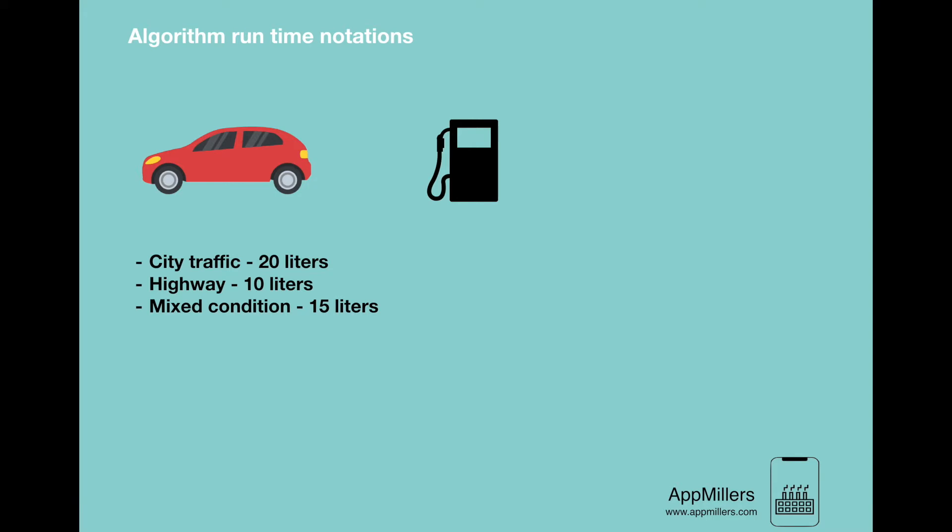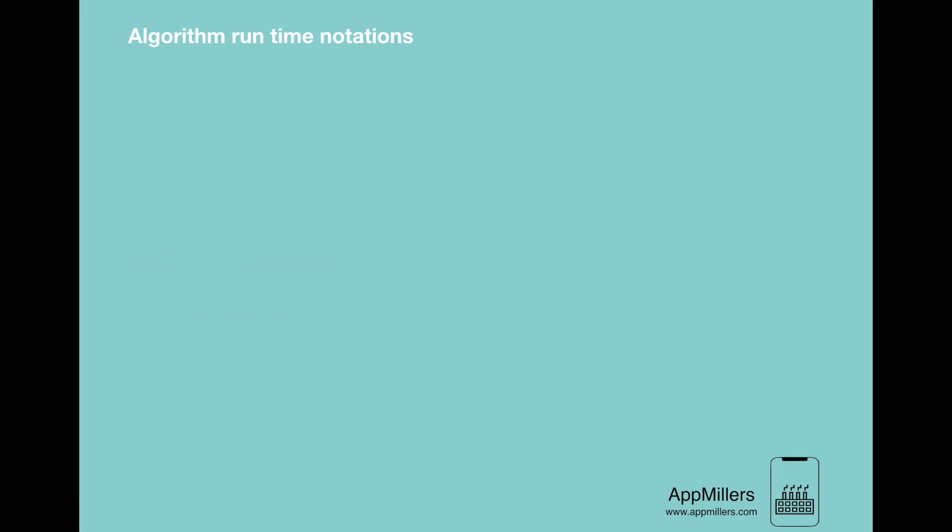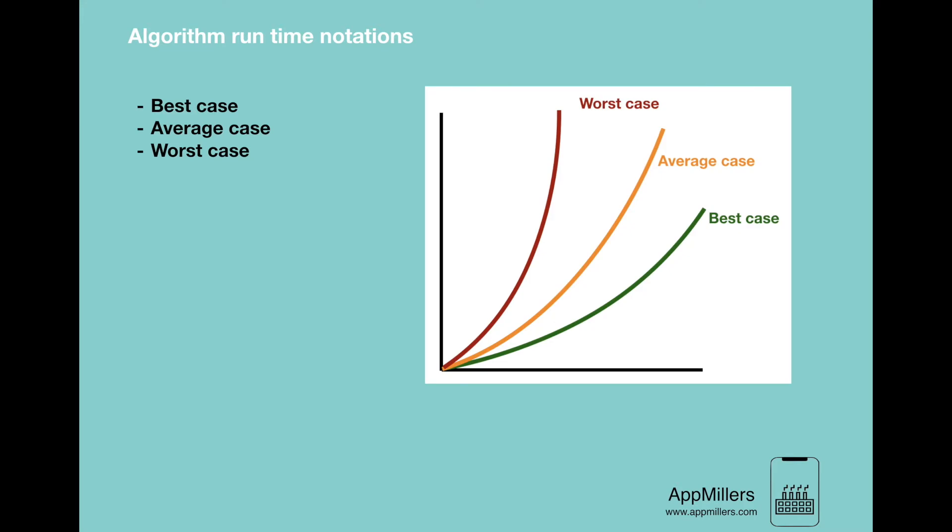Similarly, algorithms can perform differently based on the condition that is given. We have three scenarios in case of measuring any given algorithm: the best case, the worst case, and the average case. Let's say for an algorithm, it takes one minute to execute in the worst case scenario. In the best case scenario, it takes just five seconds to execute. And finally, in the average case scenario, it takes 30 or 35 seconds to execute. With the help of these three notations, we can define the best, worst, and average cases of an algorithm.